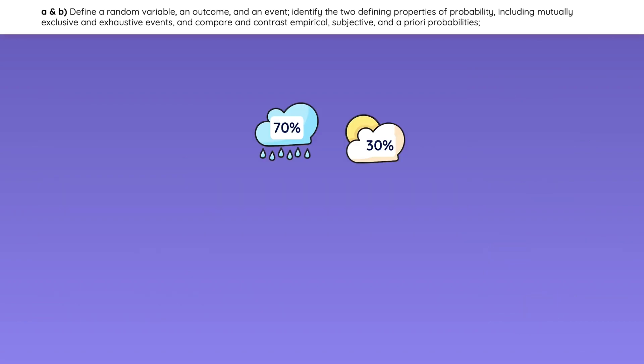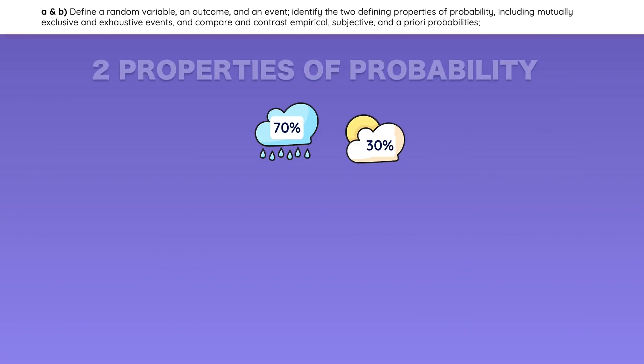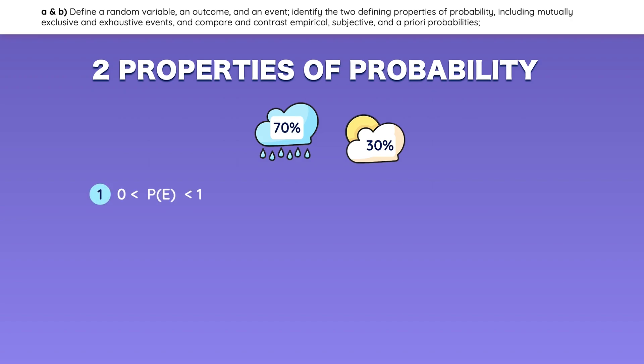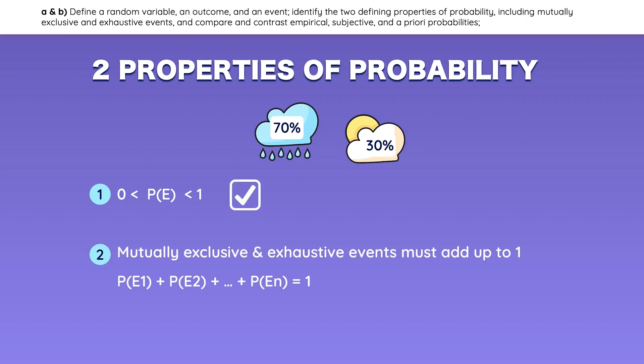Let's assume that the chance of rain is 70%, and the chance of no rain is 30%. Does this comply with the two defining properties of probabilities? The probability of each event falls between zero and one, so it complies with the first defining property. And since events are both mutually exclusive and exhaustive, their probabilities must add up to one, so it also complies with the second defining property.